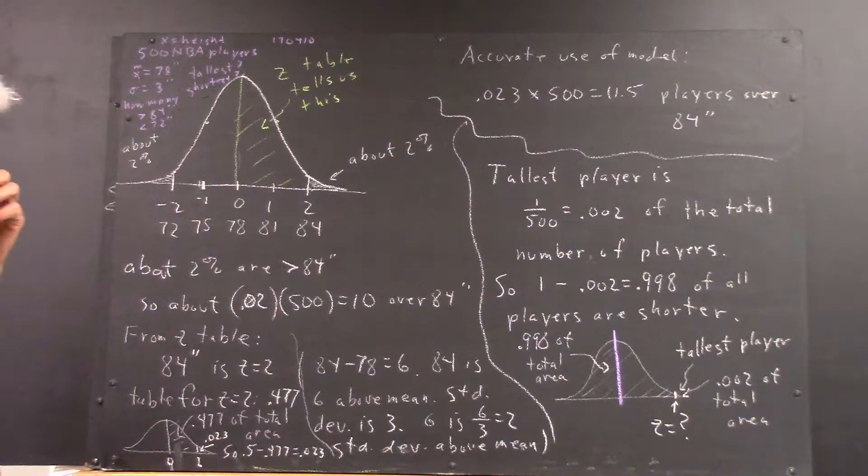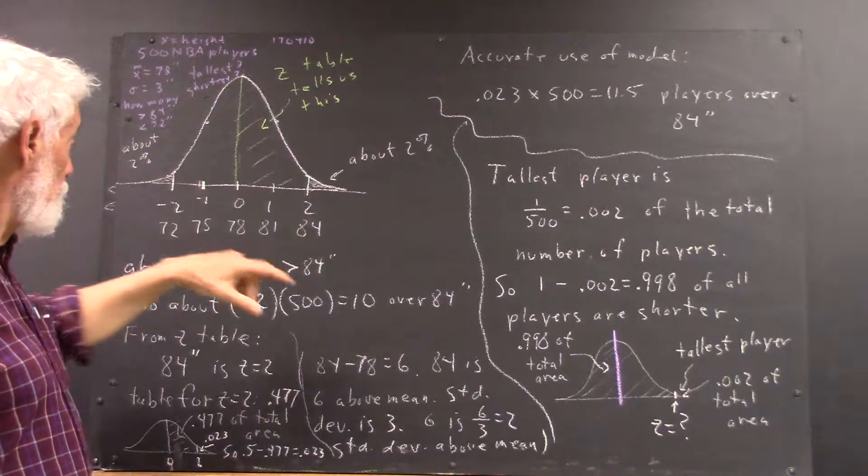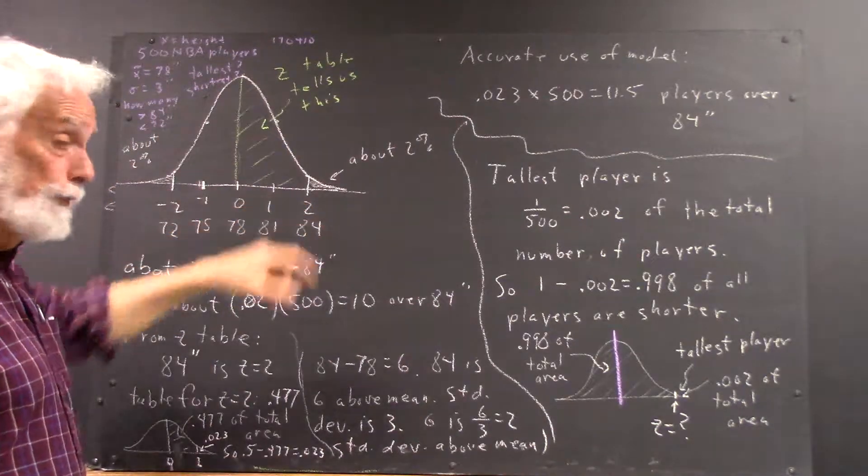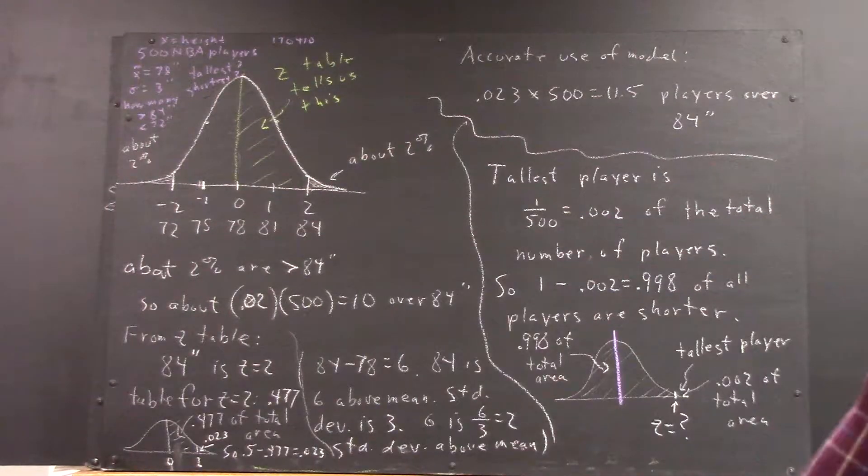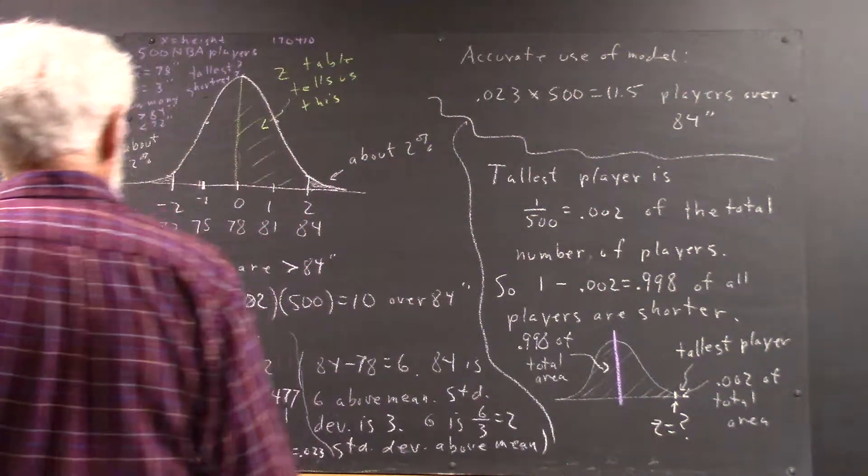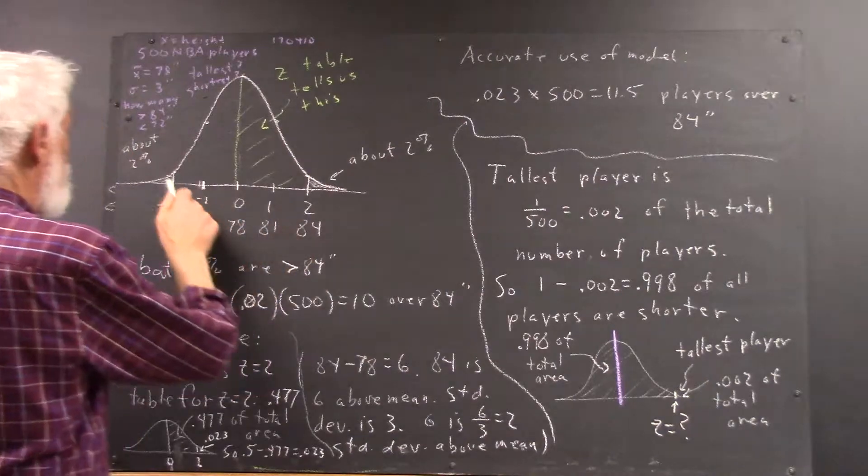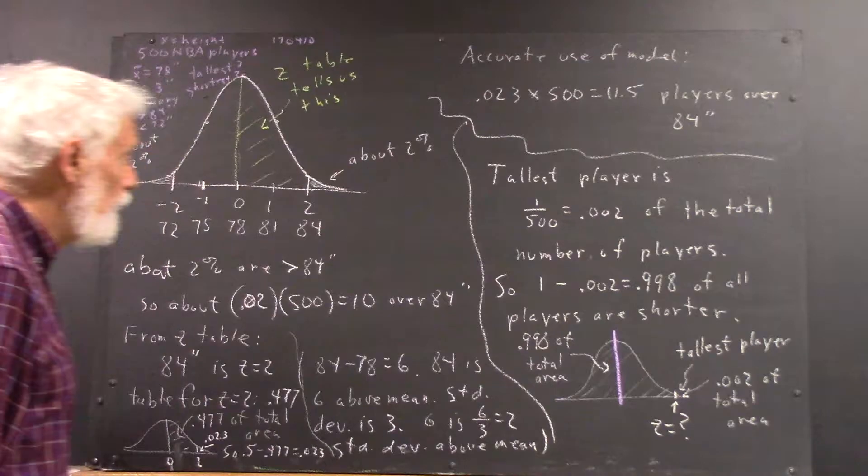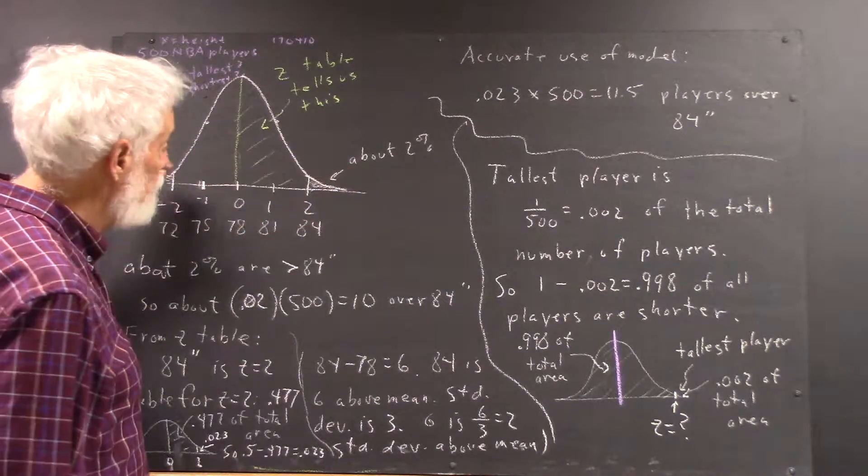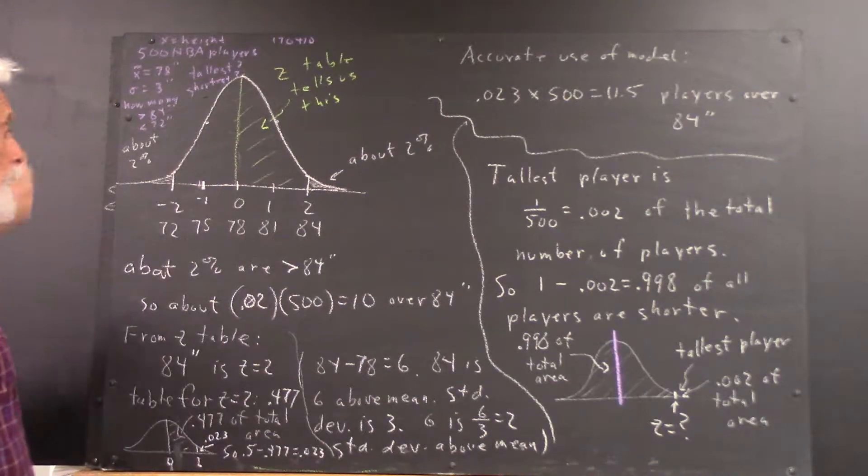We first construct our picture of the normal curve using z values from negative 2 to 2. You also want to be sure that somewhere out around z equals 3, this thing gets very close to the x-axis. After that, it's pretty much so close that it blends in with the z-axis, or the x-axis.